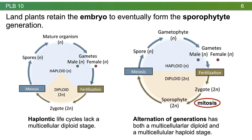Ancestrally, plants had a haplontic life cycle where the gametophyte is dominant and there is no multicellular diploid stage. We get the alternation of generations life cycle by retaining the zygote instead of undergoing immediate meiosis, allowing it to divide mitotically into a multicellular diploid generation — the sporophyte. Once we have a sporophyte, we can make spores, so we no longer rely on aquatic zoospores but instead have airborne spores like in land plants.